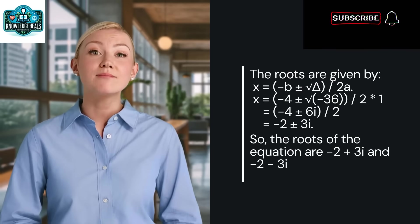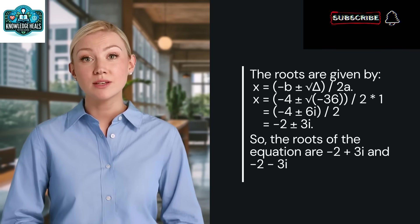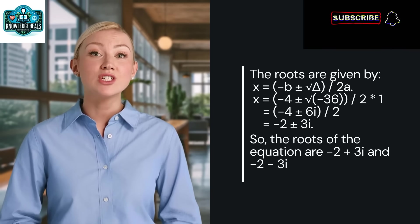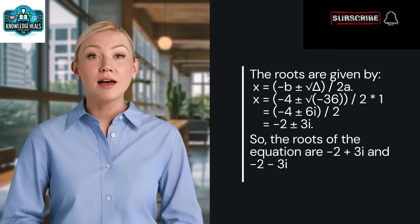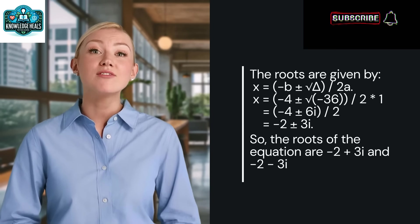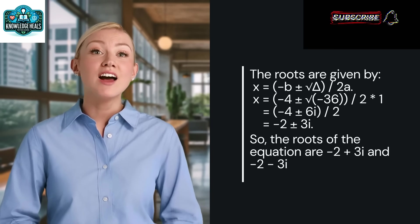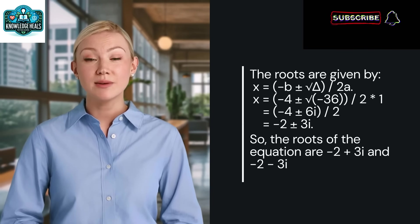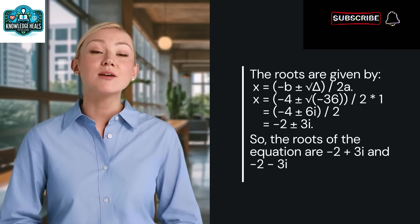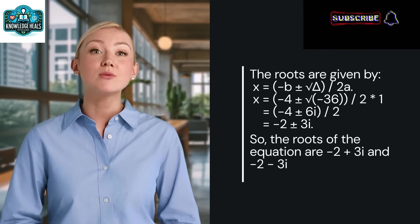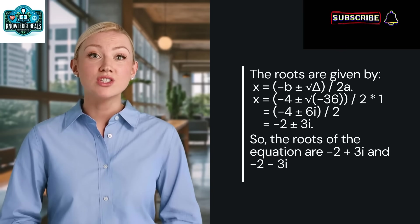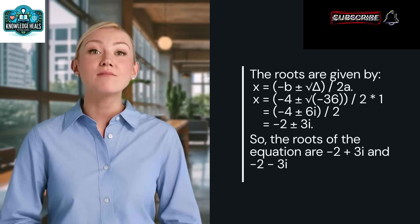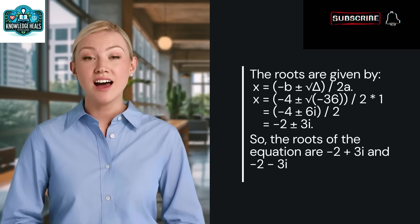The roots are given by x equal to minus B plus minus root of delta divided by 2A. X equal to minus 4 plus minus root of minus 36 divided by 2 multiplied by 1 equal to minus 4 plus minus 6I divided by 2, which is equal to minus 2 plus minus 3I. So, the roots of the equation are minus 2 plus 3I and minus 2 minus 3I.